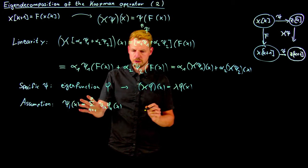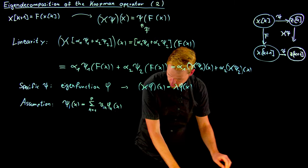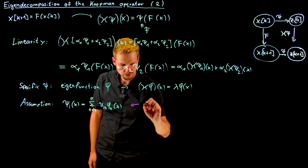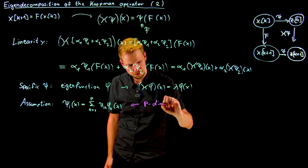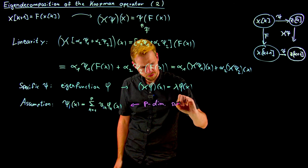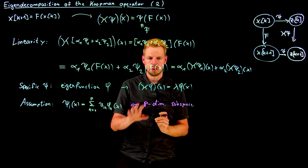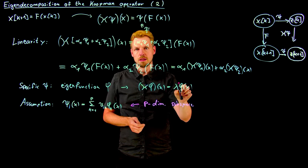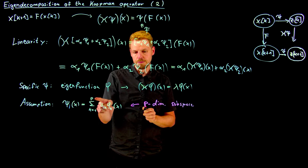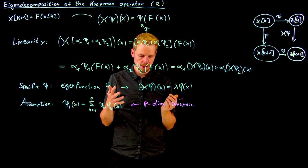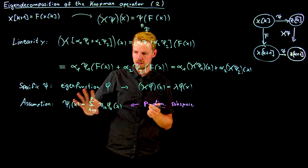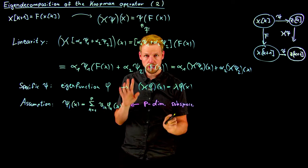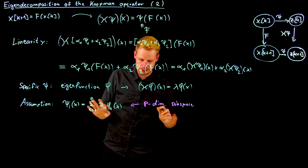And so this defines a p-dimensional subspace. Whereas we talked about infinite dimensions before, we now have a finite number of eigenfunctions p that define a subspace of our function space where we study the system in. So we restrict ourselves to the subspace. And now, let's assume we can do so. We are going to discuss details about this a little later. But if we can, then we can simply plug this into our definition of the Koopman operator and see what comes out.